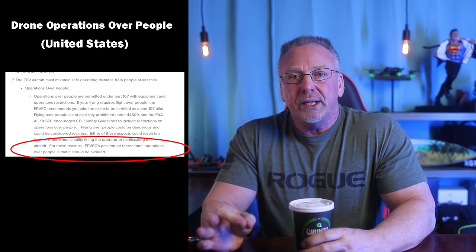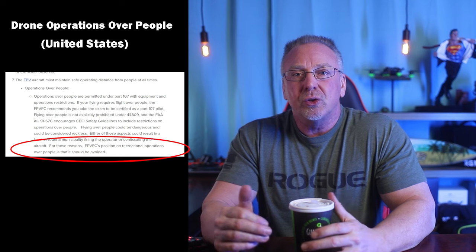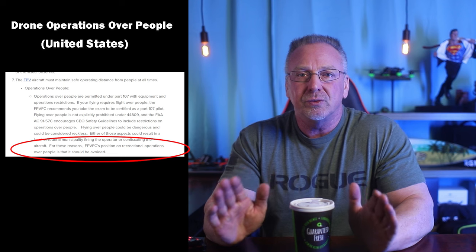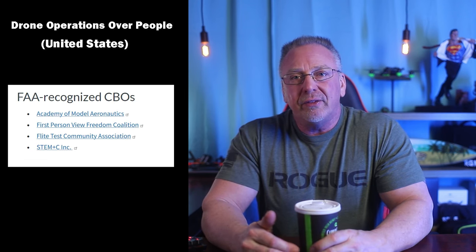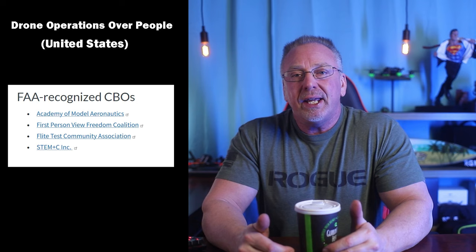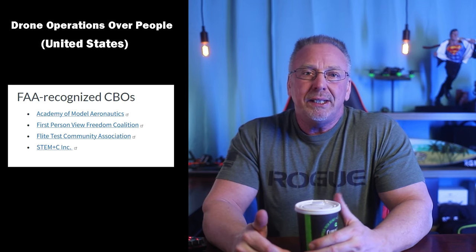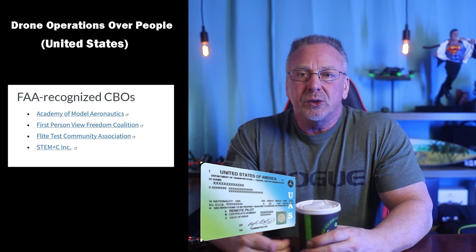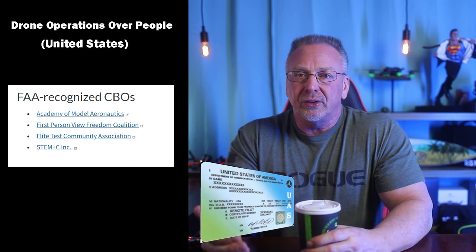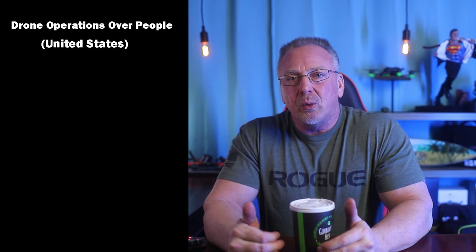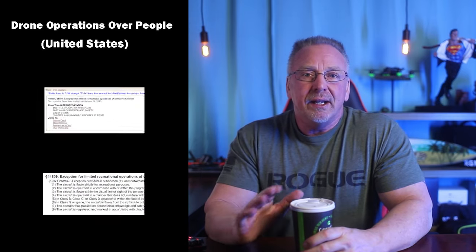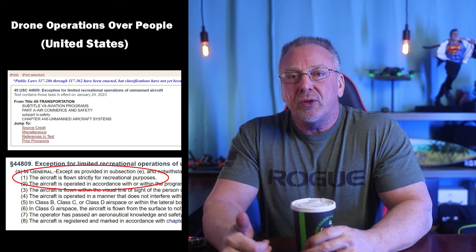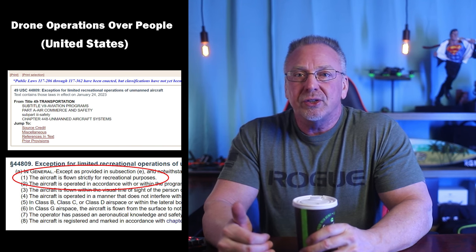As a recreational flyer, you're still responsible for following the CBO guidelines you've selected as they pertain to flying over people — it's not exactly black and white. If you don't meet all the criteria of a designated CBO, the FAA will consider you a Part 107 pilot, which means they'll expect you to have a remote pilot certificate and the drone needs to be individually registered.